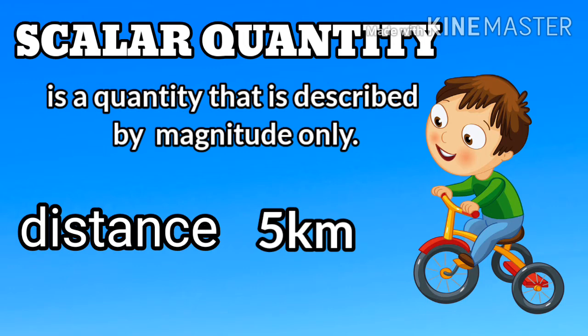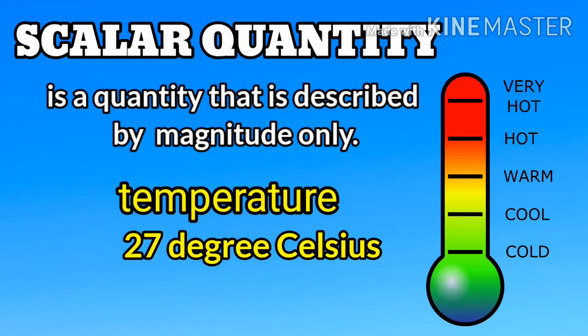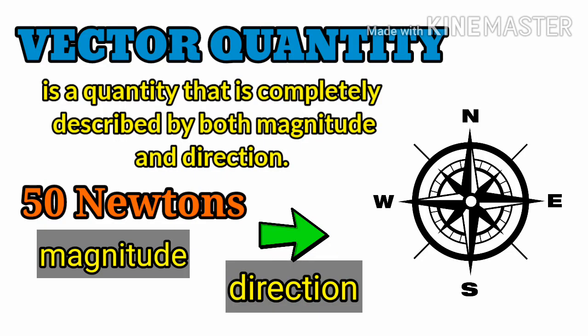For example, 5 kilometers, where 5 is the magnitude. Temperature is another example of a scalar quantity: 27 degrees Celsius, where 27 is the magnitude. A vector quantity is a quantity that can be completely described